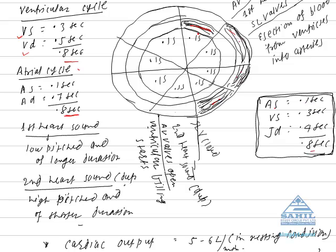Atrial systole is 0.1 seconds, ventricular systole is 0.3 seconds, but we see overlapping here: 1, 2, 3, and 4. This is called joint diastole which stands for 0.4 seconds.